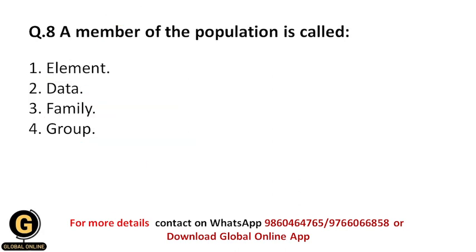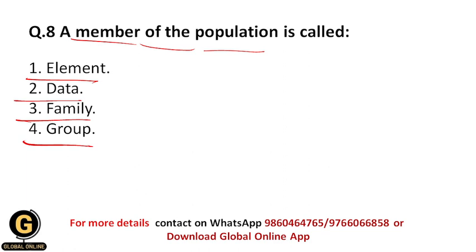Question eight: A member of the population is called — element, data, or family group? A particular member of the population is called a unit or element. So the correct answer is 1.